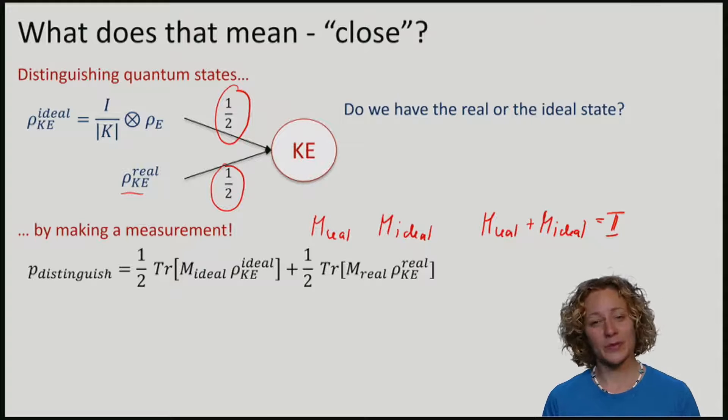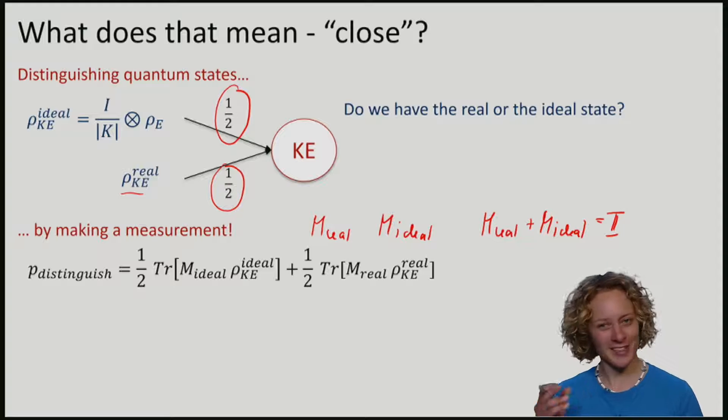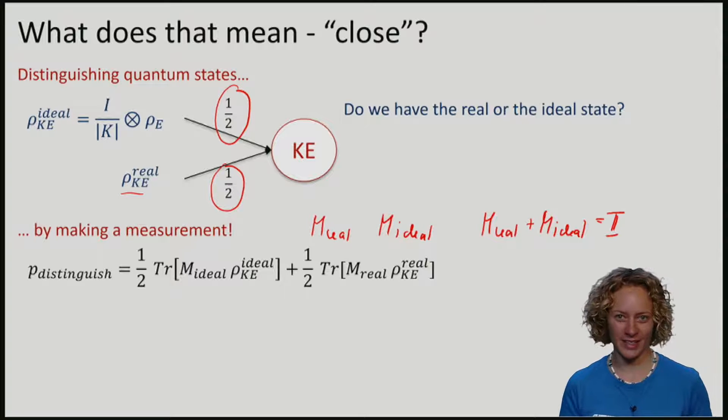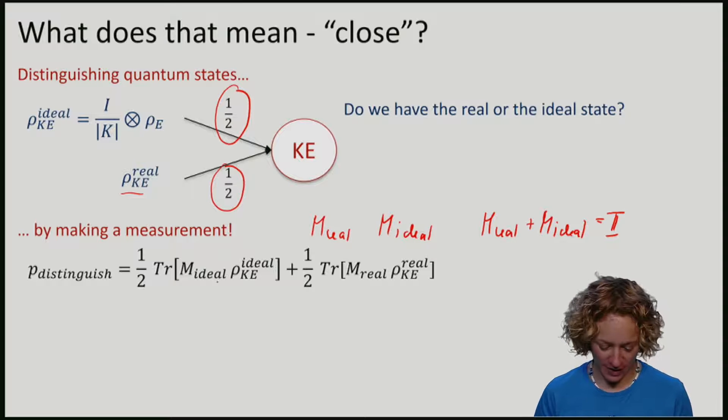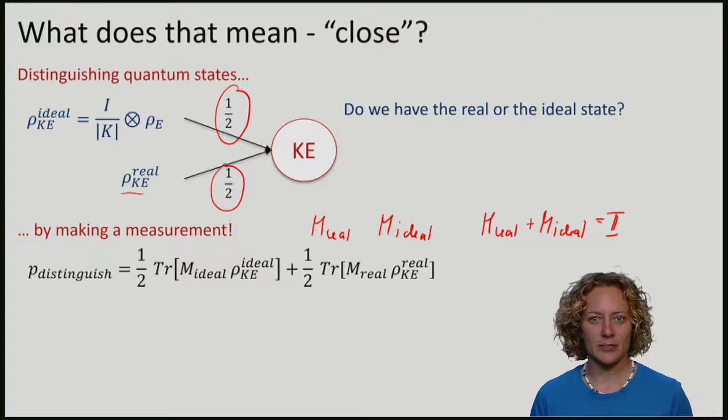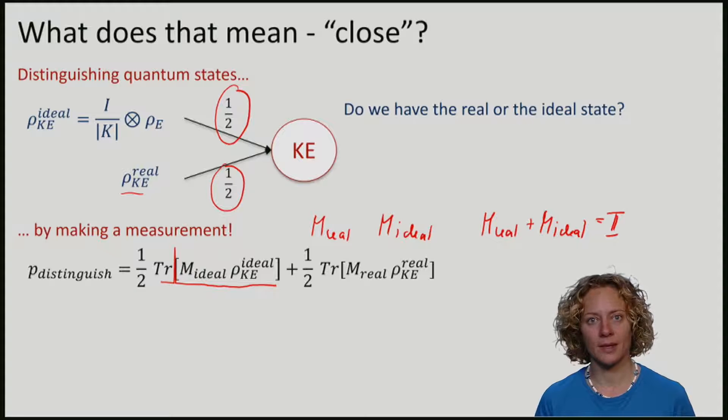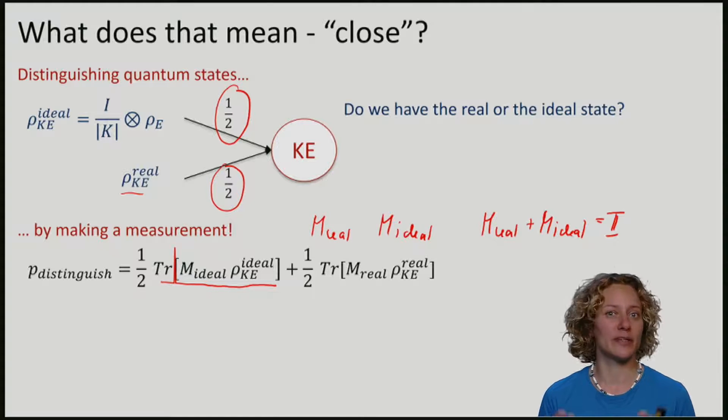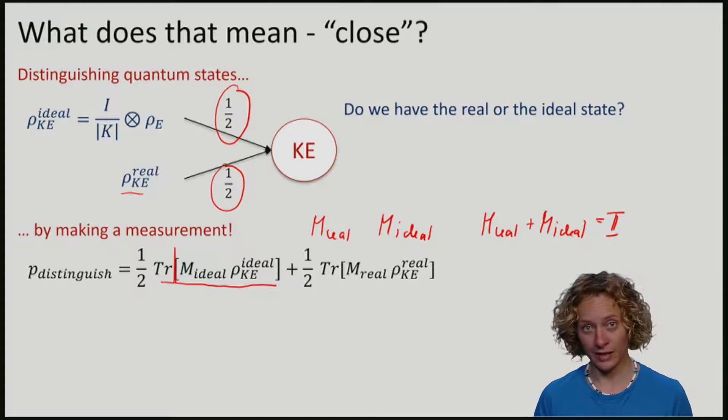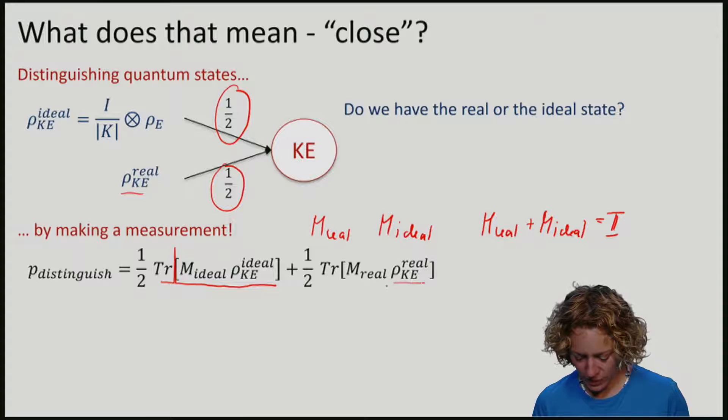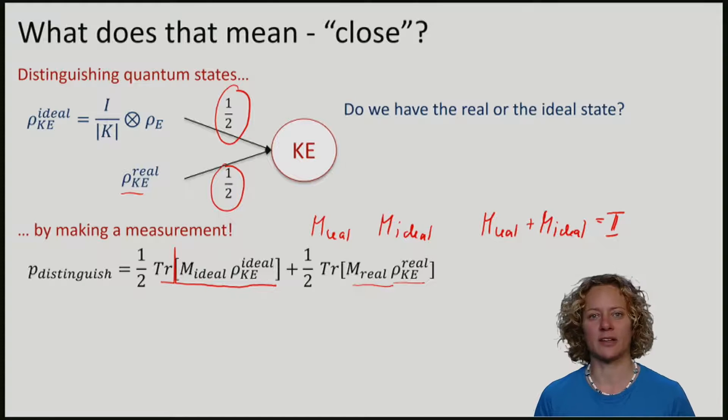So, let me now write down the probability that you manage to distinguish these two scenarios. With probability half, I've prepared the ideal state. And this here is the probability that, given the state is ideal, you correctly identify it. With probability half, I run the real protocol to prepare the real state. And in this case, this is the probability that, given the state was real, you correctly identify it as such.